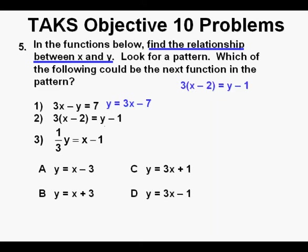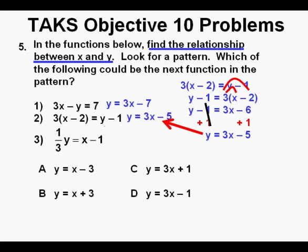Next we'll look at function number 2, 3 times quantity X minus 2 equals Y minus 1. The first thing we'll do is use the symmetric property of equality and switch sides so we have Y minus 1 equals 3 times quantity X minus 2. Next we'll use the distributive property of algebra and distribute or multiply the 3 outside the parentheses to the X and the negative 2 inside the parentheses. And that gives us Y minus 1 equals 3x minus 6. Add 1 to both sides of the equation, negative 1 plus 1 cancel on the left side. We bring down what's left and that's Y equals 3x minus 5. And we place this equation also in slope intercept form Y equals MX plus B next to function number 2.